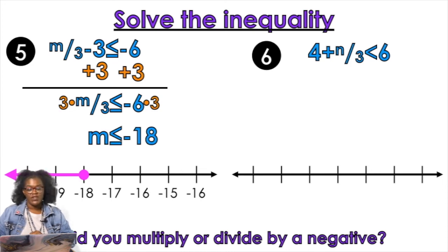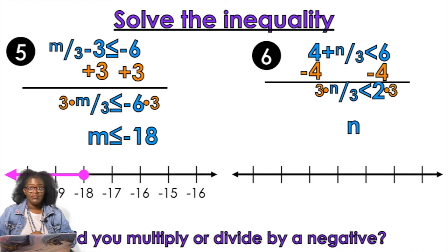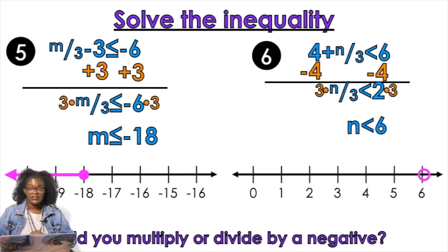Last example: 4 + n/3 < 6. What do we get rid of first? Subtract 4 from both sides, giving us n/3 < 2. Then how do we get rid of that 3 on the bottom? Multiply by 3 on both sides. Is it a negative? No, so the symbol stays the same. Open circle or closed circle? Open. Left or right? Left. Go back to the video, see if you can do the examples on your own, and like, comment, share, subscribe — tell everybody you know, and be good, bye!